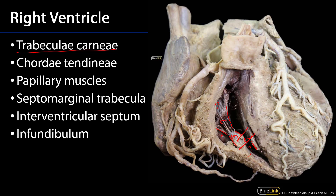We can also see the interventricular septum and the interventricular sulcus, along with the associated anterior interventricular artery and great cardiac vein within the sulcus, showing the relationship between that sulcus and the septum.